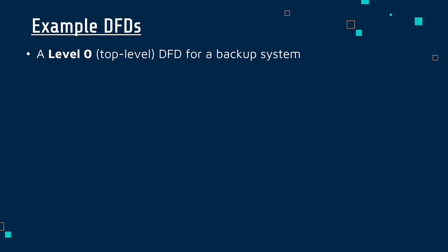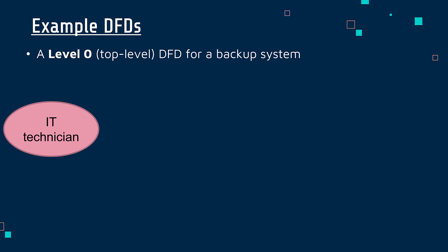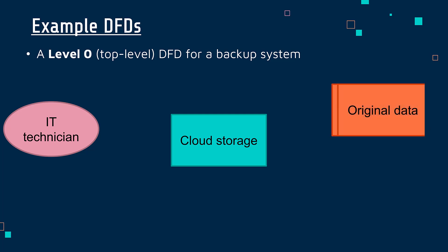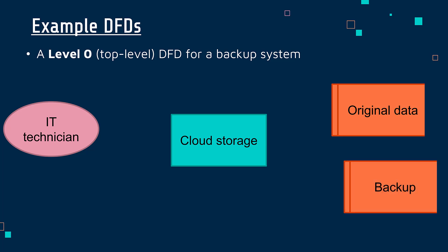Let's look at an example. This first example is what is sometimes described as a level zero DFD, also called a top level DFD. This is a diagram of a backup system. So we might have an IT technician — they'd be in an oval because they are an entity providing and receiving data. You might have the cloud storage system, which might be a company like Google, Apple, or Microsoft, and you might have your data stored somewhere and a backup of that data stored somewhere else. You would draw arrows between them which have a direction, showing the direction the data is going to flow in, and it's a good idea to annotate these arrows saying what is going on at that particular stage.